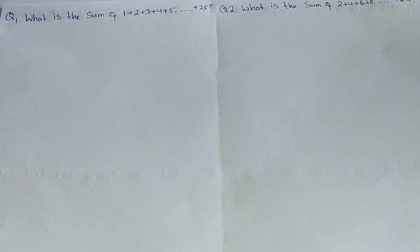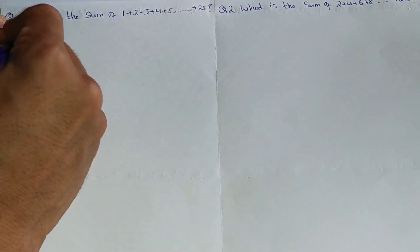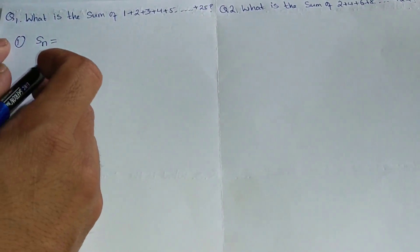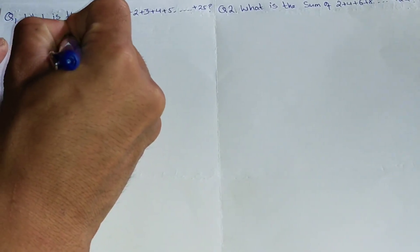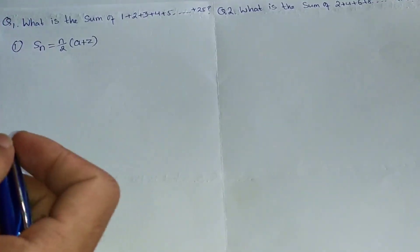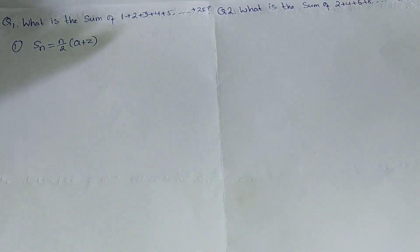The first question is: what is the sum of 1, 2, 3, 4, 5... continuously up to the 25th term? We are asked to find the sum of the first 25 consecutive numbers. The formula we need to find is the general sum formula. The sum of n terms is equal to n over 2, multiplied by (a plus z). There are 25 terms, so n equals 25.